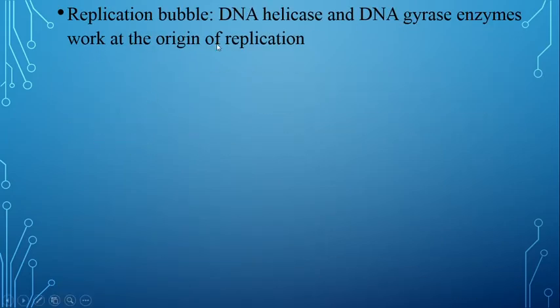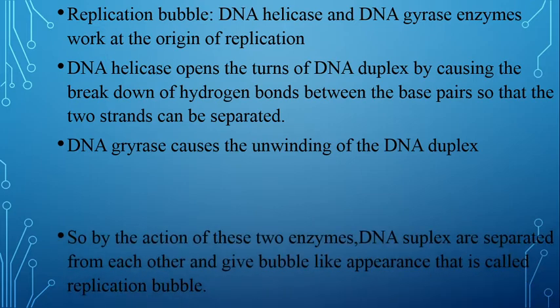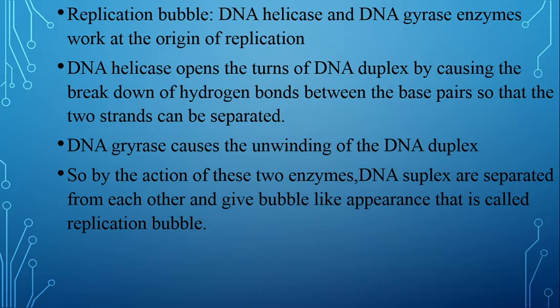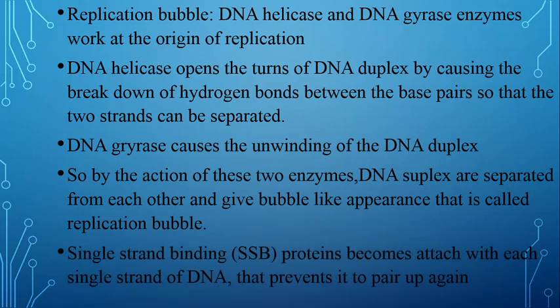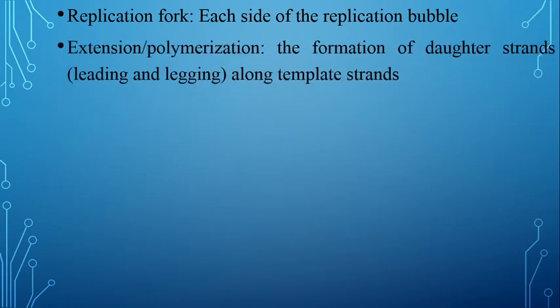Replication bubble mein: DNA Helicase enzyme DNA duplex ko unwind karta hai by causing the breakdown of hydrogen bonds between the base pairs, so that the two strands can be separated. DNA Gyrase (isomerase) DNA duplex ko unwind karta hai. In DNA enzyme ki action ki wajah se replication bubble ban jayega, aur iske jo ends hote hain unko replication fork kehte hain. Jo DNA strand alag ho jayega toh single-stranded binding protein (SSB) ek ek strand ke saath attach ho jayega, taaki DNA dobara na judhe.